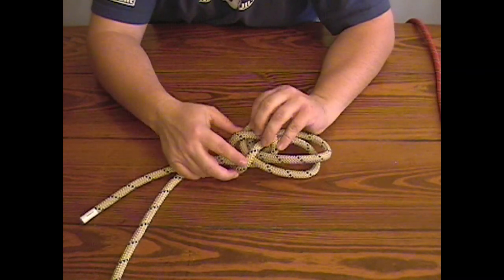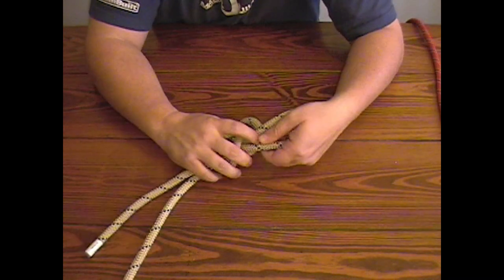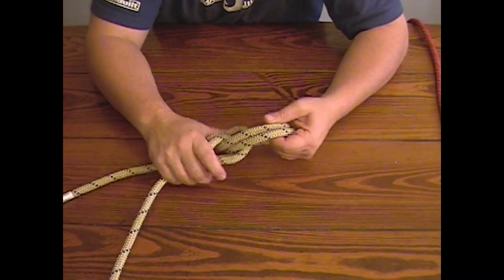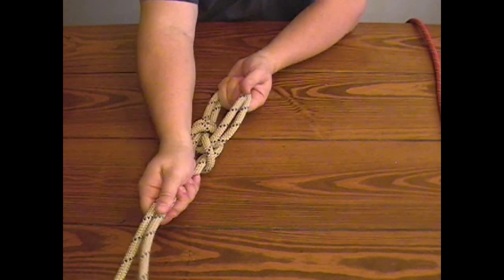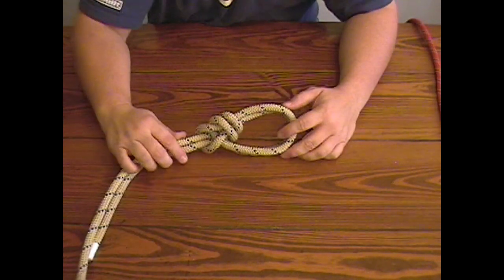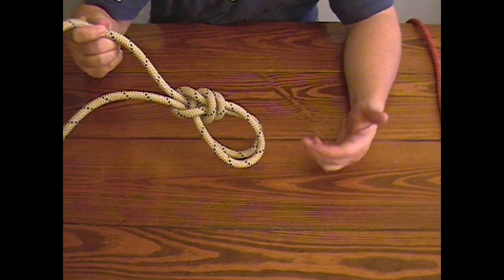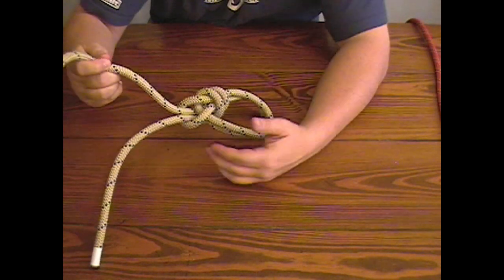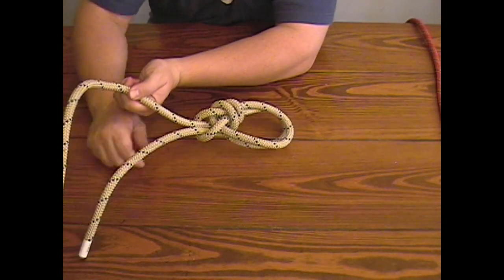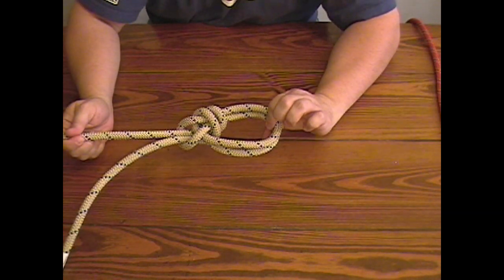At this point I want to now go through and dress the knot so it loads evenly and is symmetrical in its shape. A dressed knot will hold stronger than a messy or non-dressed knot. So that's a bowline on a bite. The only thing I'd be lacking for ropes course use here would be a double overhand backup knot. This is the knot we're going to see later in the break tests.